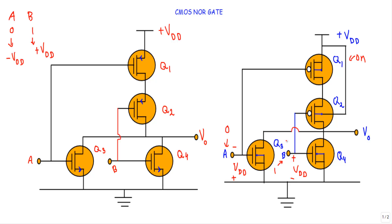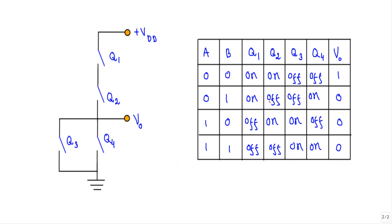Negative voltage at the gate of Q3 — an N-type MOSFET — so Q3 is OFF. Positive voltage at the gate of Q2 — a P-type MOSFET — so Q2 is OFF. Q4 is N-type and receives a positive gate voltage, so Q4 is ON. For input 0,1: Q1 and Q4 are ON, Q2 and Q3 are OFF. Replacing: Q1 = short, Q2 = open, Q3 = open, Q4 = short. There is a complete short-circuit path from the output terminal to ground, so the output voltage is zero — logic 0.